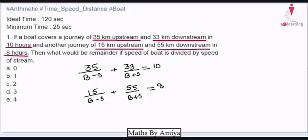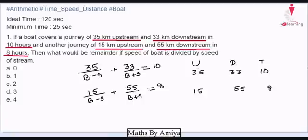My suggestion to you before solving these questions: just work on a few concepts. If values from this concept satisfy the equation, it's very good because we will save time. For the concept, we just write the upstream distance of both journeys, the downstream distance of both journeys, and the time in both journeys. We know b minus s is common in upstream.